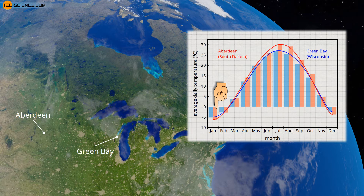Thus, in Green Bay, summers are not as hot and winters are not as cold. The reason for the smaller temperature fluctuations is due to the fact that water changes its temperature less when heat is absorbed in summer or dissipated in winter compared to the landmasses. This has a moderating effect on the temperatures in the surrounding regions.